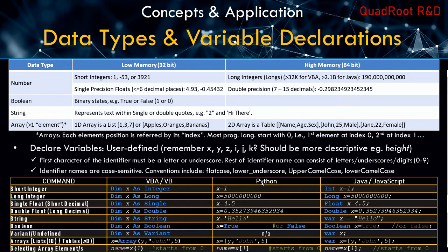In Python, we do not declare a variable separately — we declare and initialize at the same time. Python automatically detects the data type and assigns memory accordingly. So 'x = 1' is recognized as a short integer, 'x = 5000000000' as a long, and so on for floats, strings, and Booleans. Arrays are assigned using square brackets: 'x = [...]'. To select a single element: 'name = x[0]' retrieves the first element from array x and stores it into name.